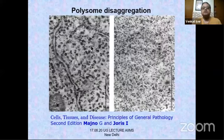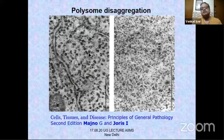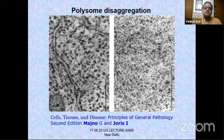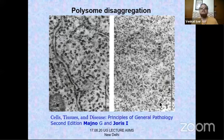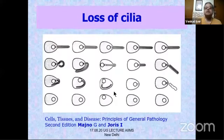Normally, polysomes are aggregated in small strands, actively translating proteins via mRNA. With injury and no ATP, ribosomes are evenly distributed everywhere — they dissociate from the rough ER, leaving the RER smooth. The cilia get lost as tubulin depolymerizes and is shed.